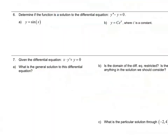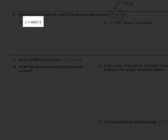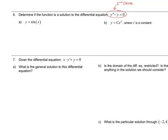All right, folks, page two. Question six says: determine if the function is a solution to the differential equation y double prime minus y equals zero. I throw this example in here because it gives us a little practice working with differential equations. This is a second order differential equation because it has y double prime on it. You're not asked to solve anything here — you're asked if this is a solution to y double prime minus y equals zero. Let me show you how we would approach that.